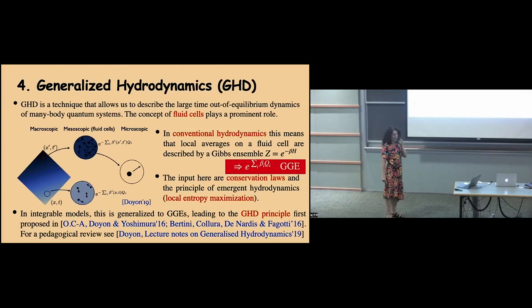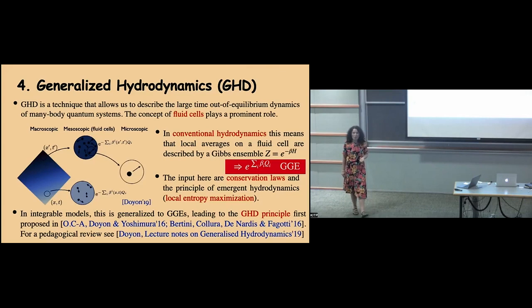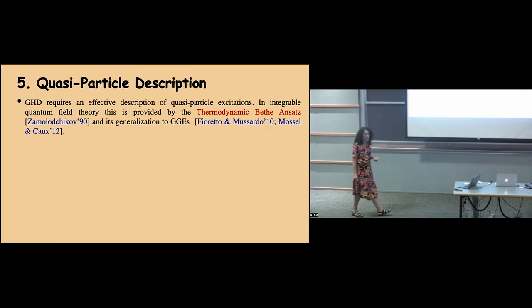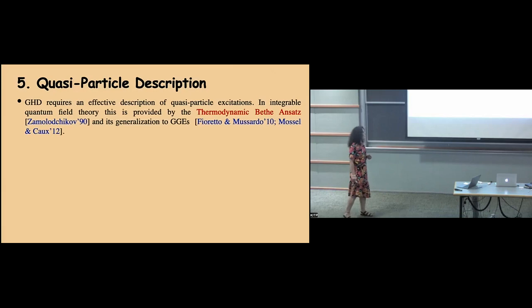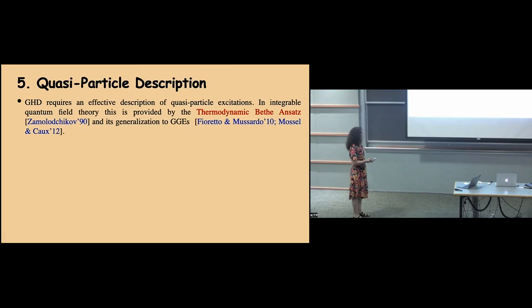The idea of these projects was to take this GHD description and apply it to this model, and to see what effect — if any — the unstable particle would have in the results, and how the results would differ compared to a more standard quantum field theory. A key ingredient is the TBA description, so let me say a little bit about that before going into the results.